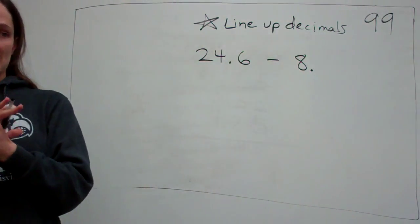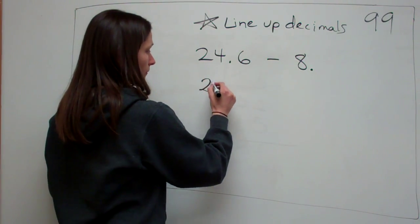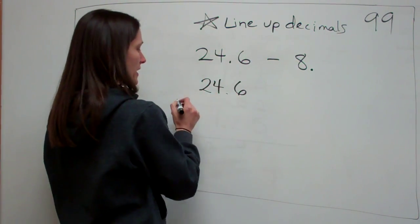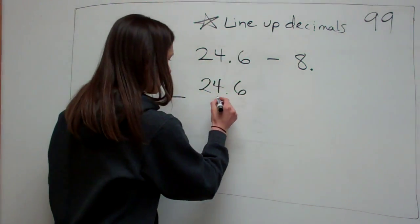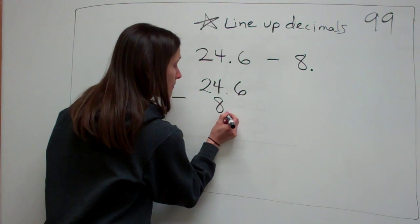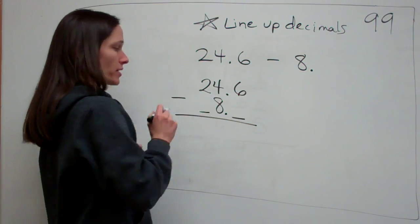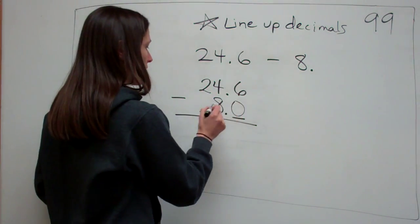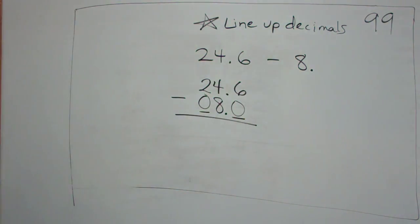What's my next thing I need to remember? Yes. To put the decimals lining up. Very good. 24.6 minus, where's my 8 going to go? Under the 4. Under the 4, very good, because my decimal is there. Okay, what should I do with these extra spots? Put zeros. Put zeros, put zeros in there. That helps you. Okay, and so then we just subtract like normal. Can I do it on the board? Yes, you may. Come on up.